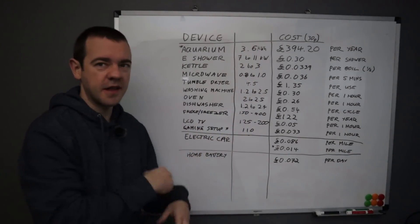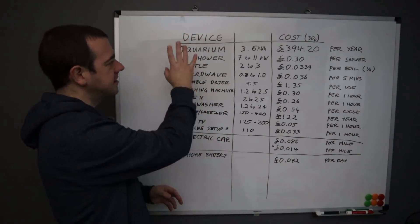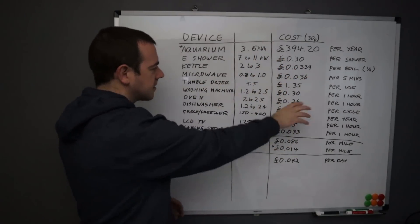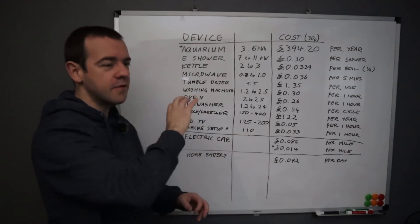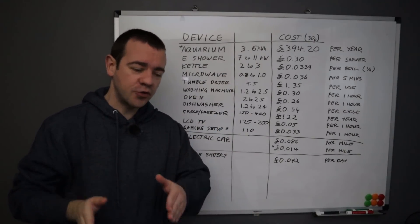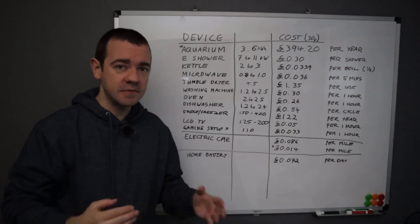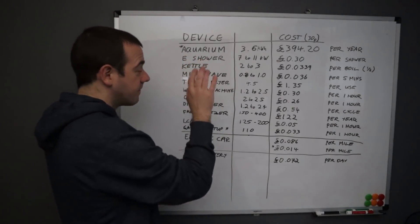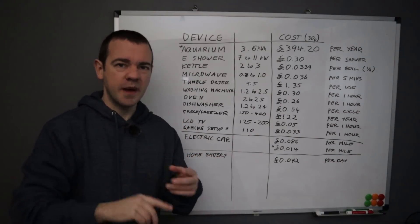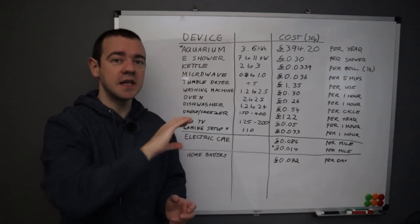The column here you can probably ignore, that's mainly for my benefit whilst I'm doing the video. This is just a random set of appliances and devices and this is the cost for the various devices applicable to that. So I'll run you through it very briefly and quickly just to give you an idea of what things actually cost. Remember, this is based on 30 pence per kilowatt hour.